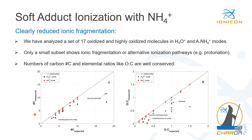On the left side, I have plotted the expected number of carbons versus the measured number of carbons for all 17 measured compounds. Most compounds follow the one-to-one line very well, with only a few exceptions like dicumyl peroxide — a compound already known to thermally degrade at 65°C. On the right side, I have plotted the O:C measured versus O:C expected in NH4+ mode. Nearly all compounds follow the one-to-one line, with a few exceptions like fructose or cumene hydroperoxide showing a slight degree of fragmentation.